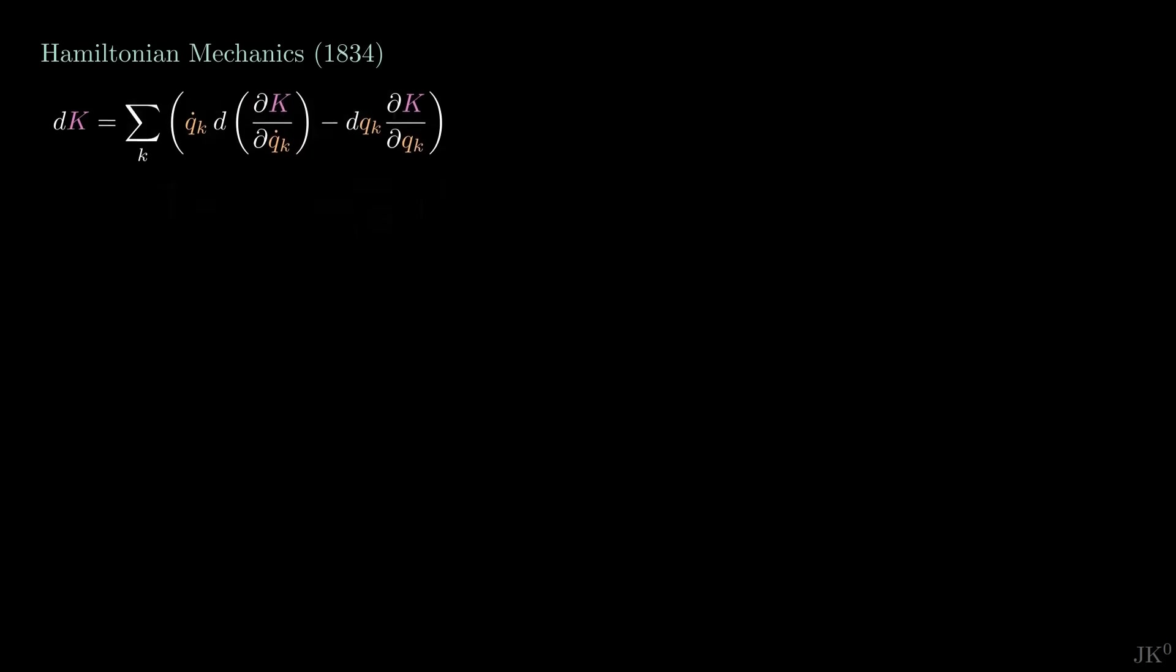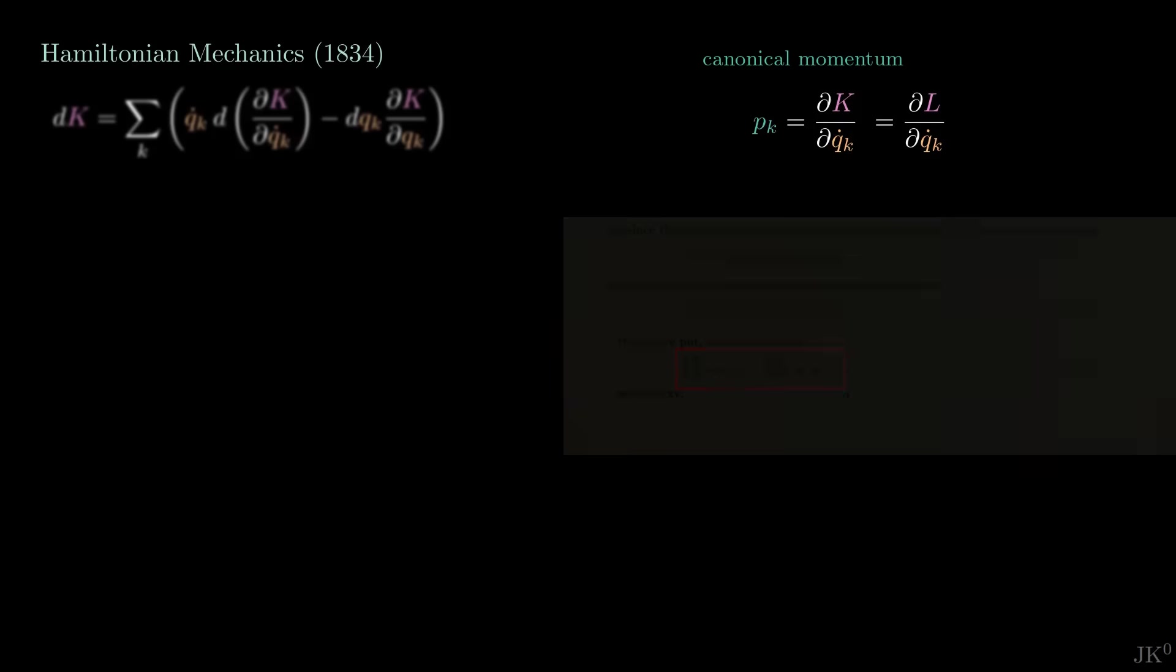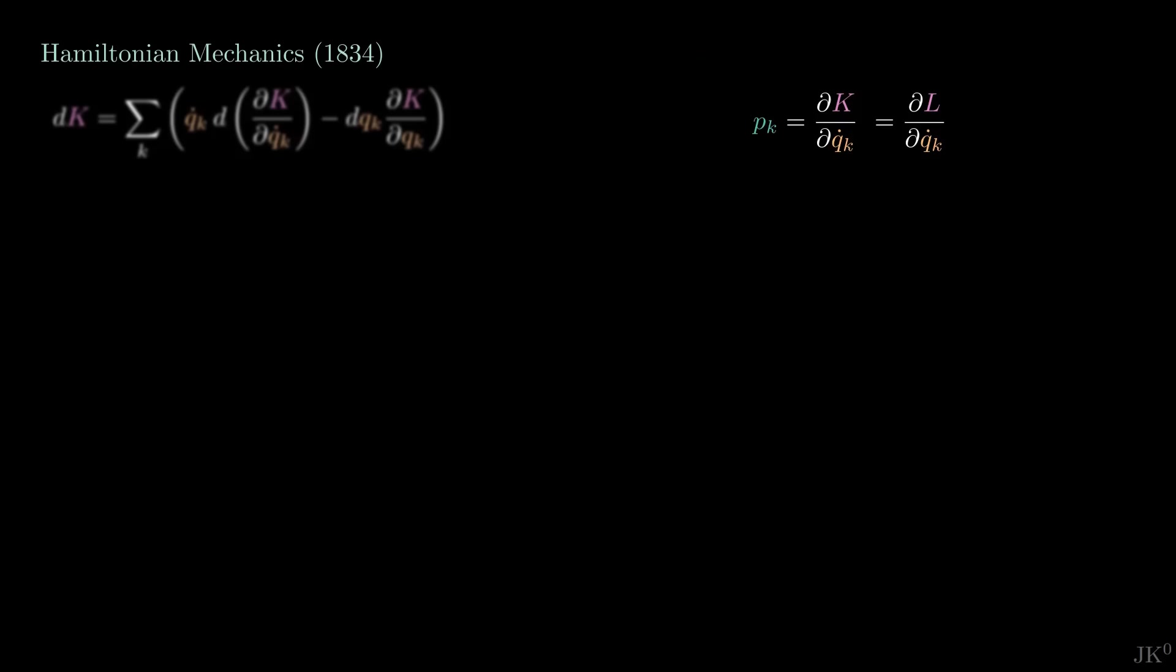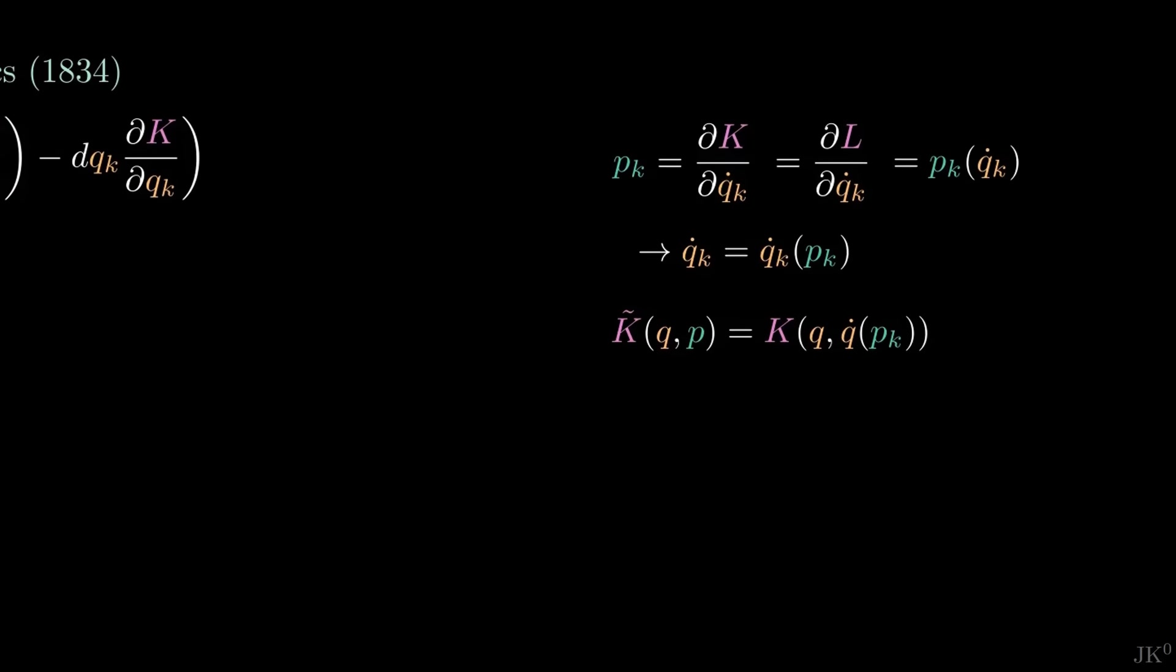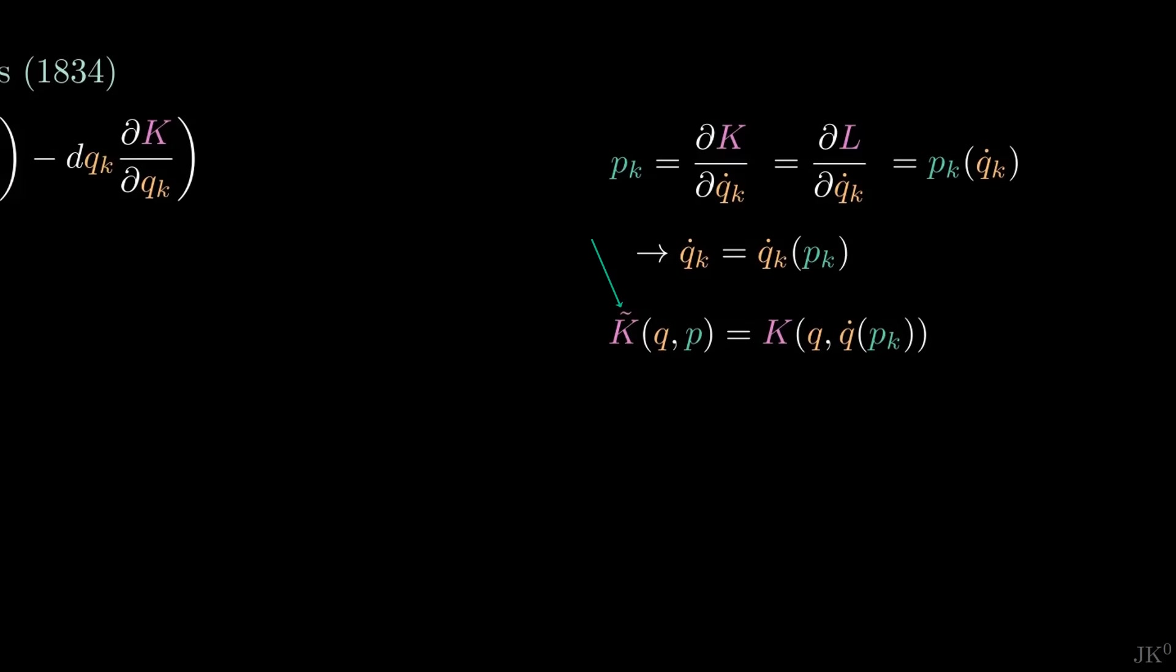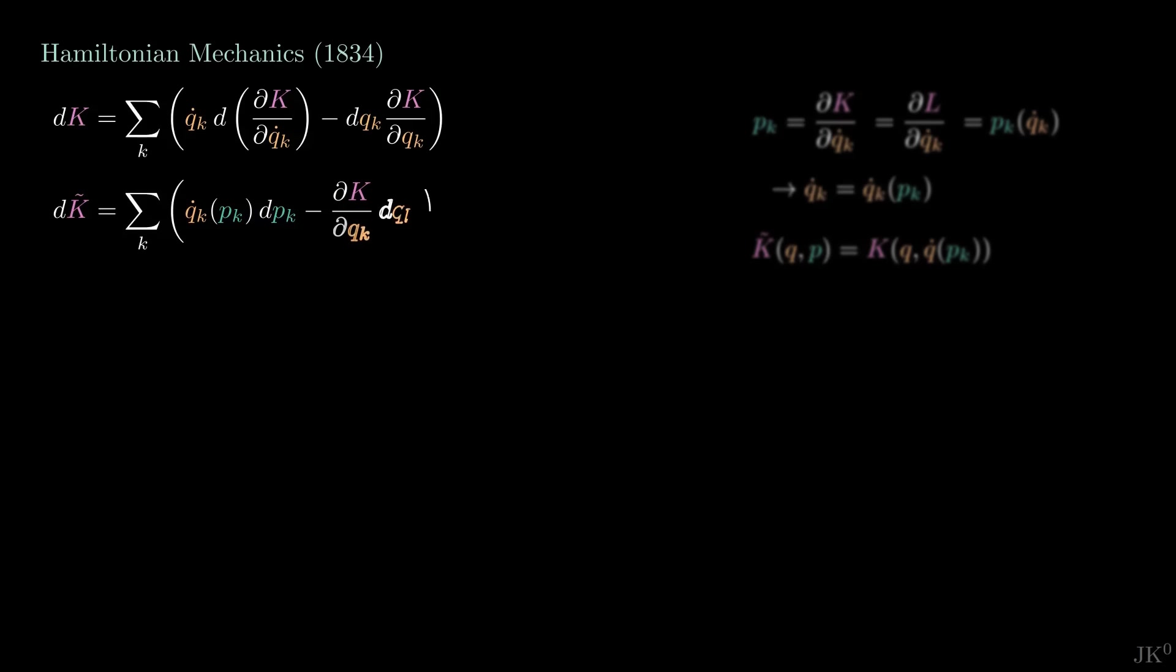Now we introduce the definition of canonical momentum p, that Hamilton calls omega, in terms of the kinetic energy, assuming that the potential is independent from q-dot. Note that in general, p is a function of q-dot. Hamilton's method is to invert this relation and write q-dot as a function of p instead, and then replace every q-dot by this function of p. By doing this, the kinetic energy becomes a function of q and p. I denote this by k tilde. Hamilton calls it f. Applying this procedure to the expression on the top left, we get the following. This expression allows determining how k tilde changes under independent changes of p and q.